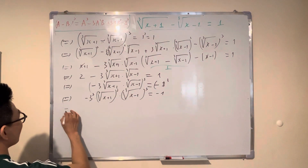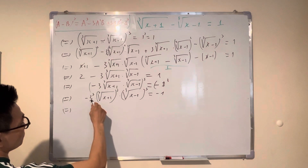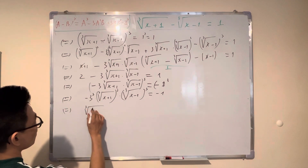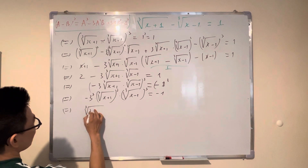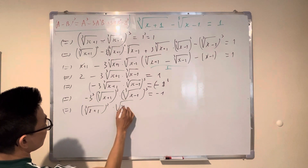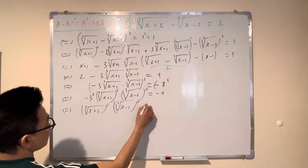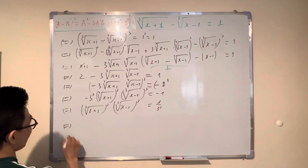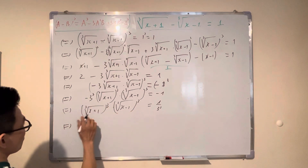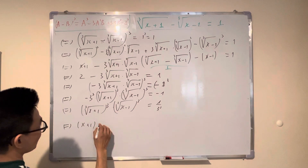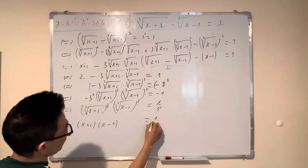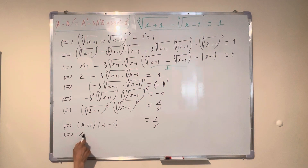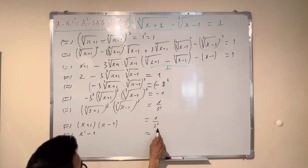Okay, divide both hand sides by negative 3. That gives you: that term to the cube power equals (x+1) and that term to the cube power equals (x-1). So (x+1) times (x-1) equals x² minus 1 equals one over 3 cubed.